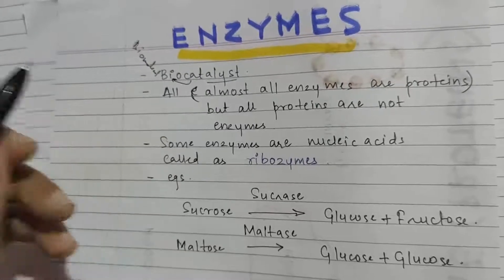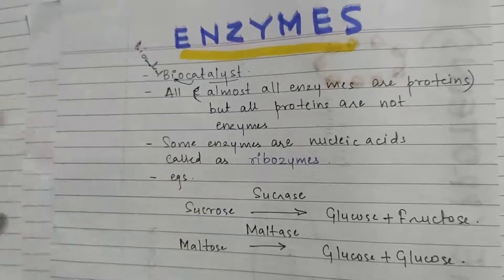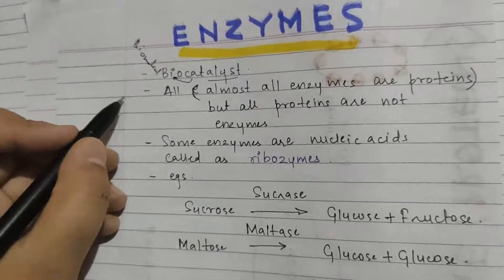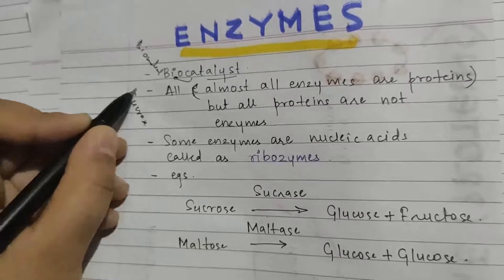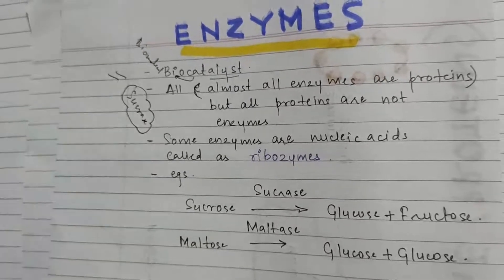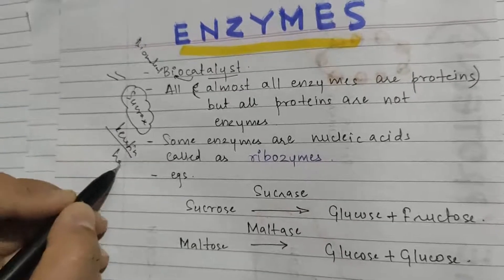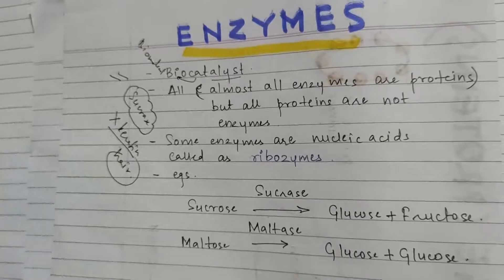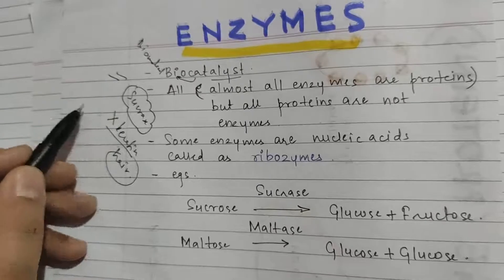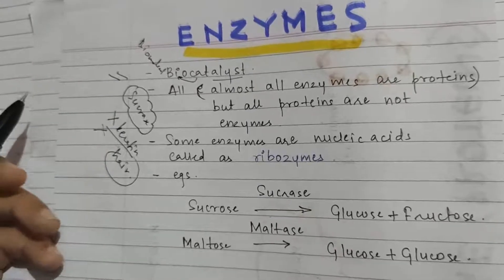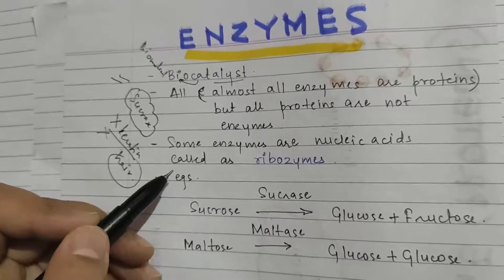To explain — almost all enzymes are proteins means: if I take an enzyme like sucrase, it is a protein. But if I take keratin, which is a hair protein, it is a protein but it is not an enzyme. So sucrase is an enzyme and a protein, while keratin is a protein but not an enzyme.